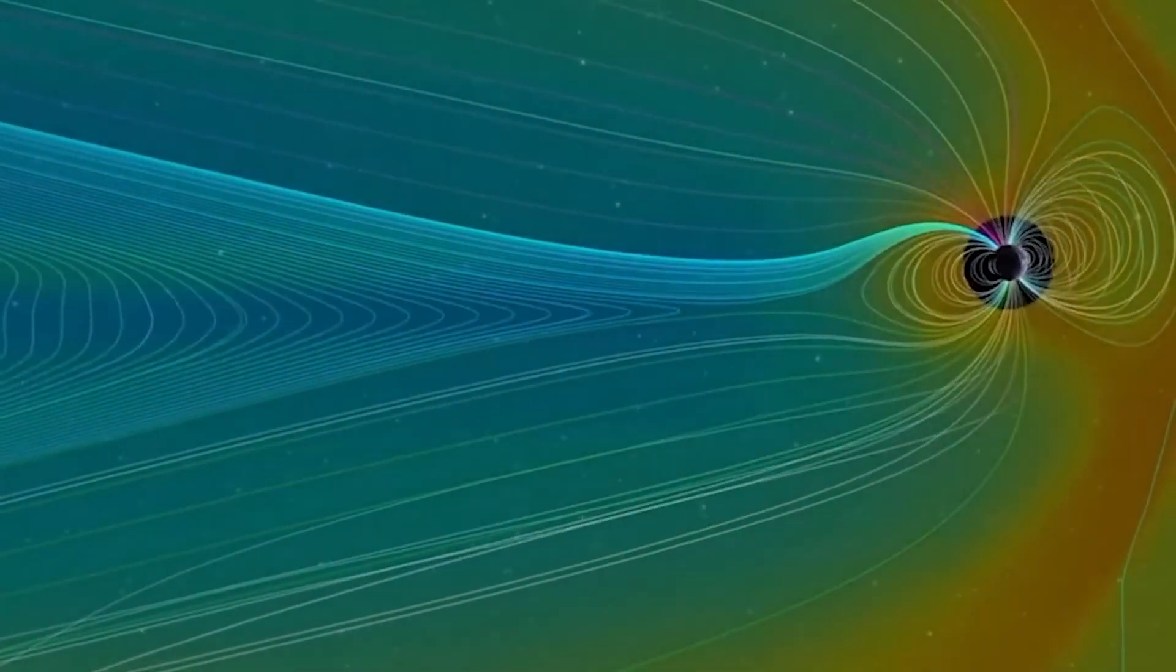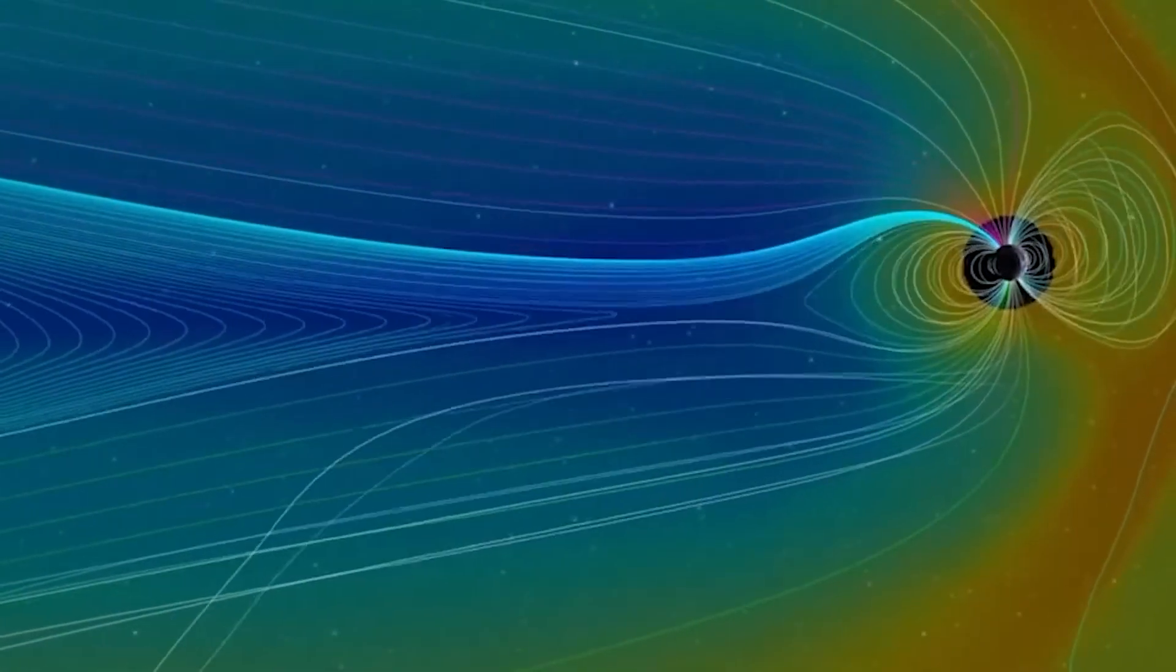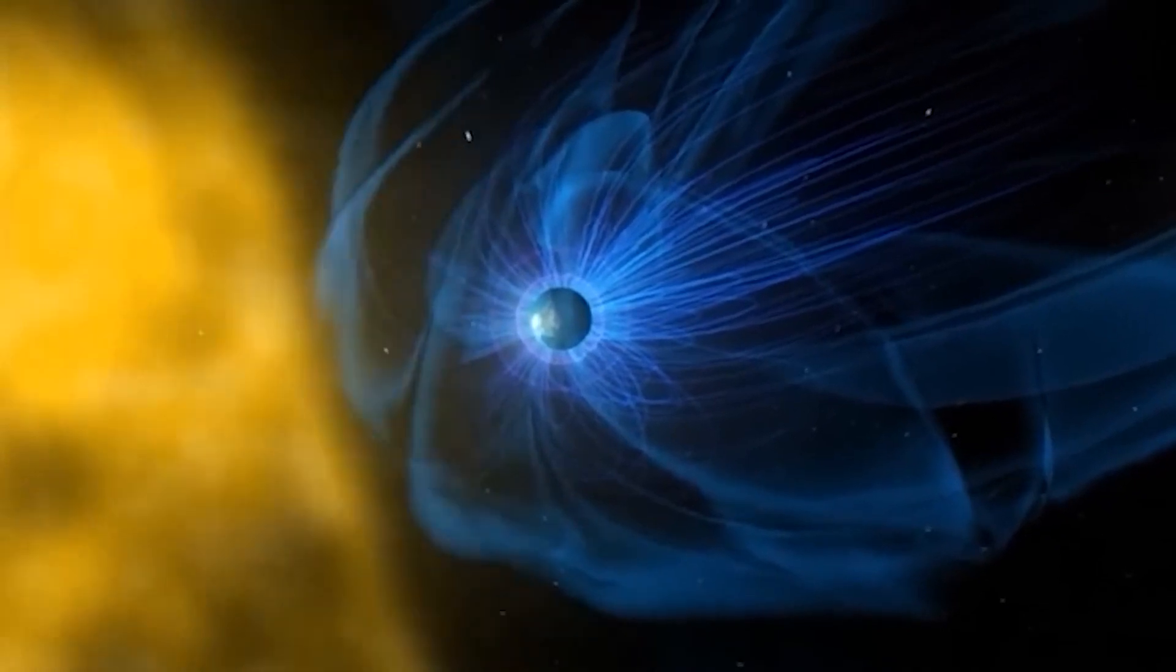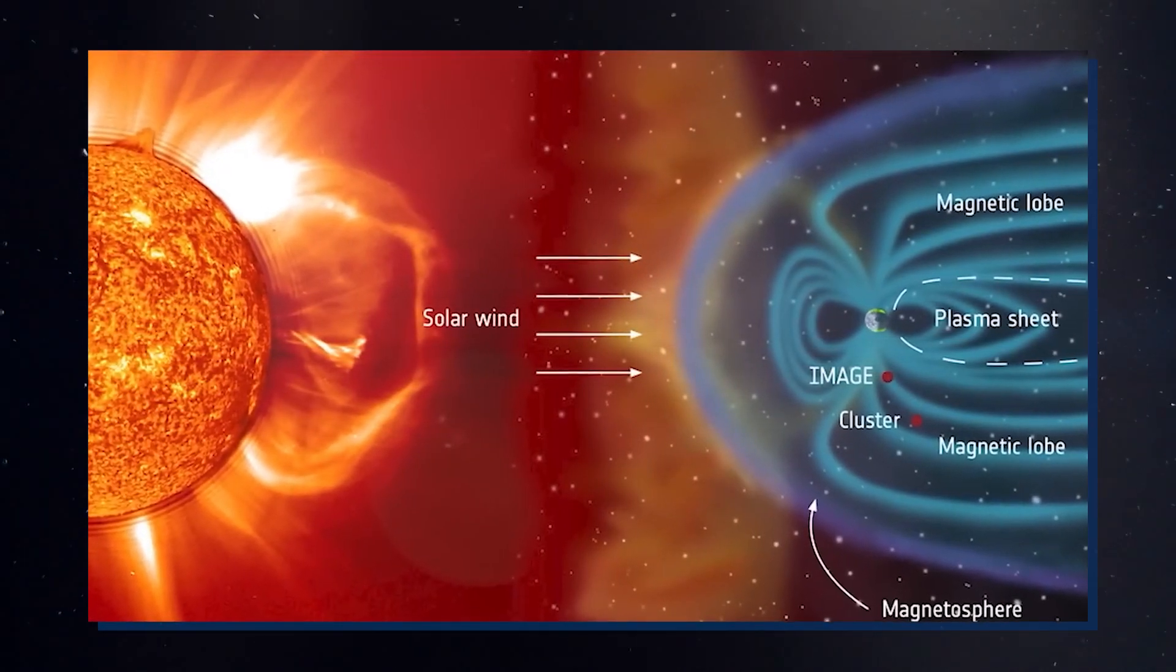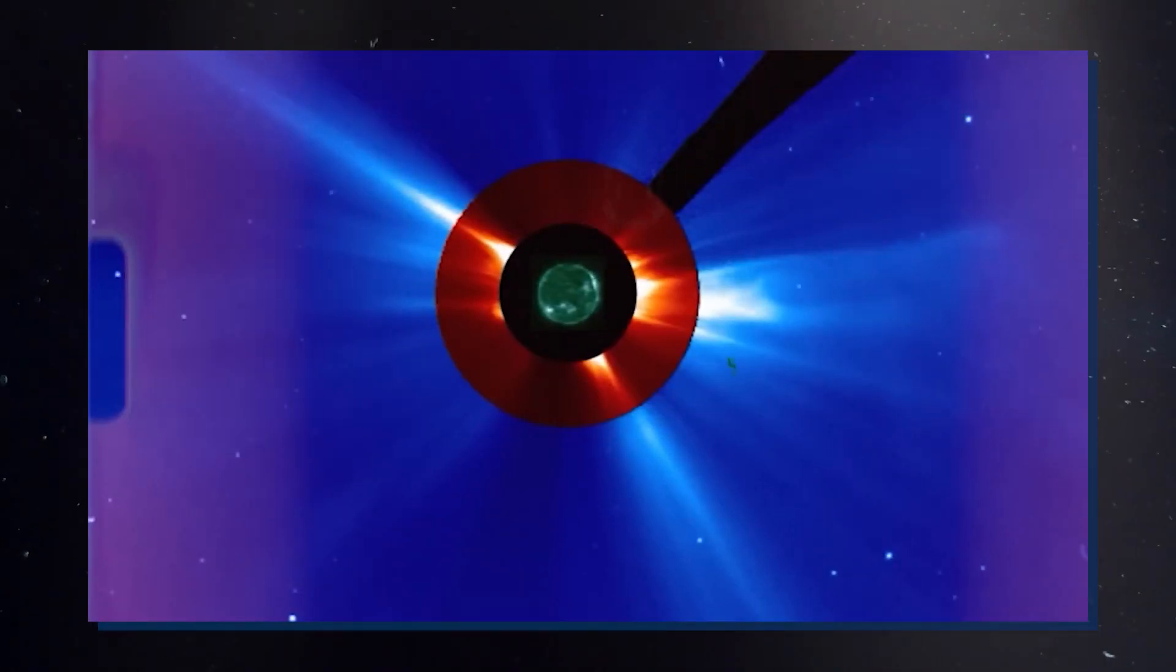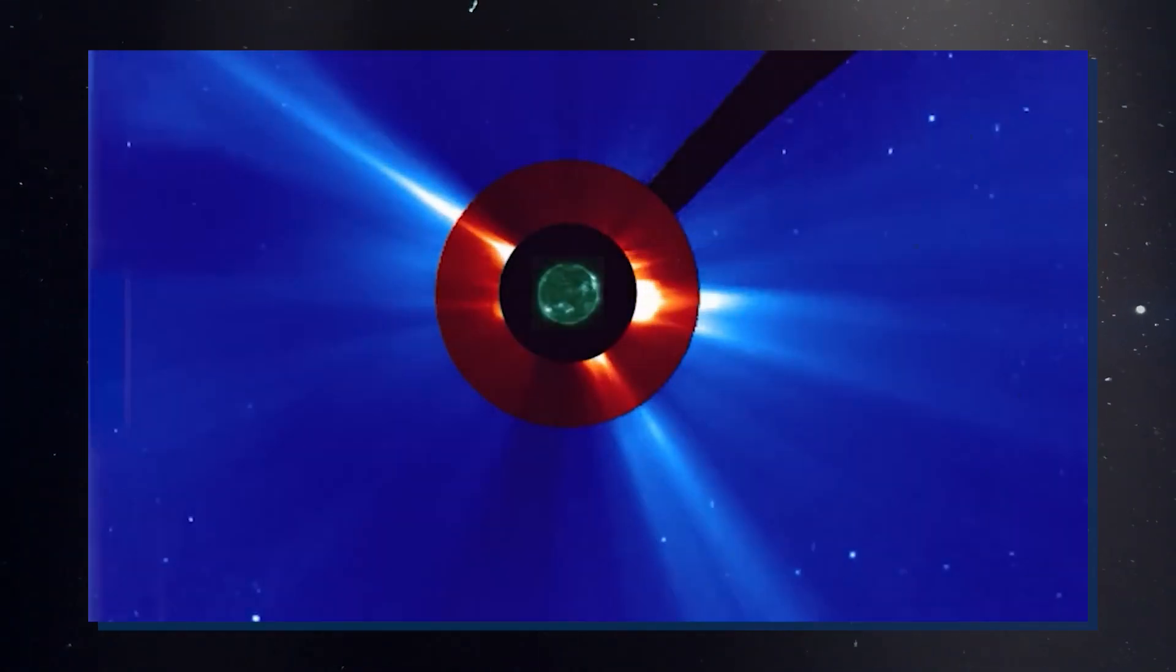Solar winds are a stream of charged particles constantly ejected from the Sun. Generated by the Sun's intense heat, these particles speed away, carrying with them the Sun's magnetic field. On reaching Earth, they primarily interact with our planet's magnetic field.